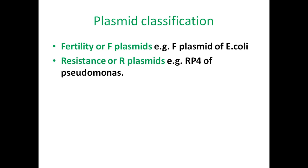The second type is resistance plasmids, or R plasmids. An example is RP4 from Pseudomonas. These plasmids carry genes that confer antibiotic resistance to the host cell. If a bacterial cell contains a resistance plasmid, it will be able to grow even under toxic conditions where antibiotics are present in the growth medium.